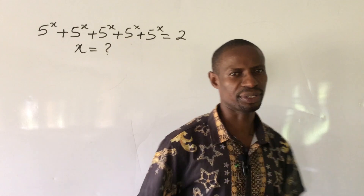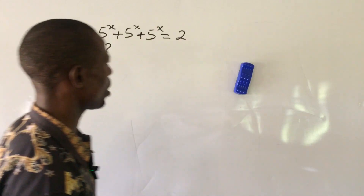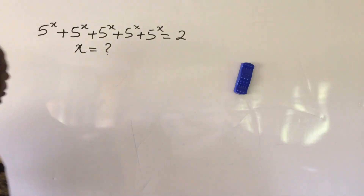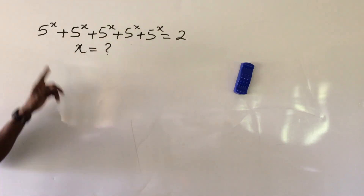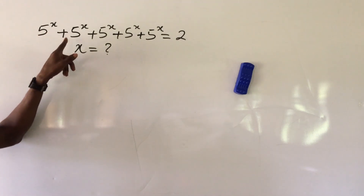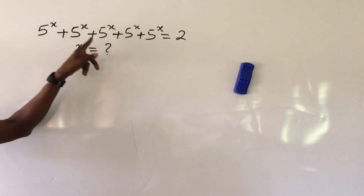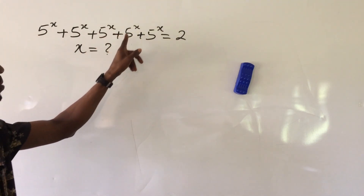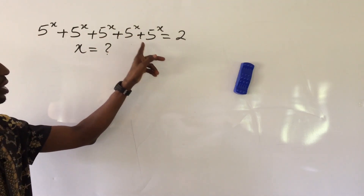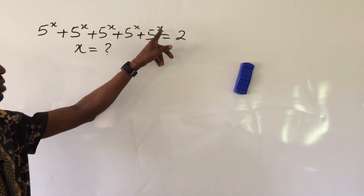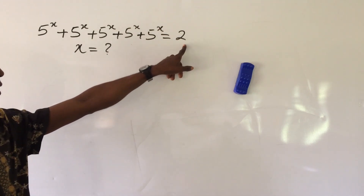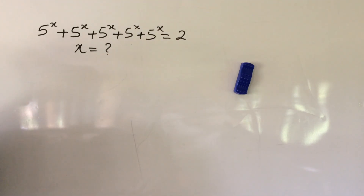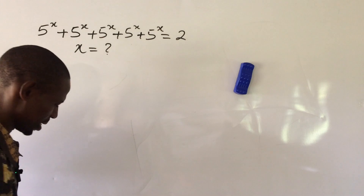So let's get into it and see how we handle this kind of challenge. The question is: 5 to the power of x, plus 5 to the power of x, plus 5 to the power of x, plus 5 to the power of x, equals 2. What would be the possible value of x here?